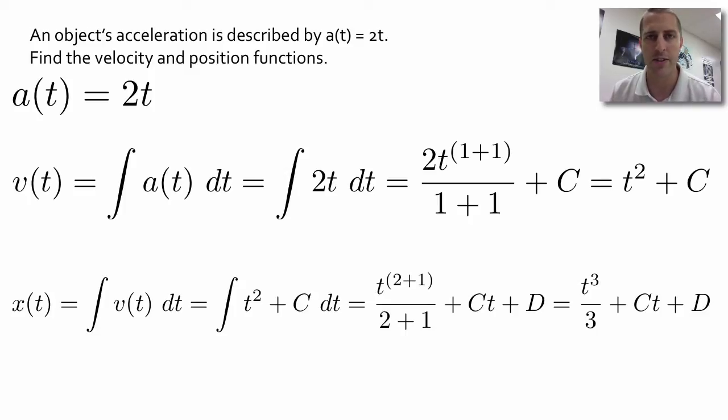We end up with t³/3 + Ct + D. C and D, they're just constants. They're probably different constants. That's why we write them as different letters.